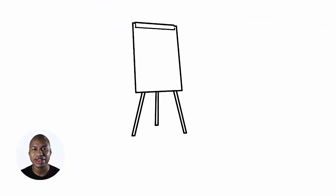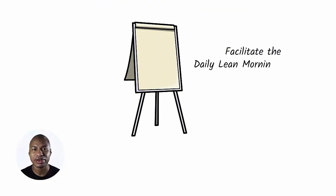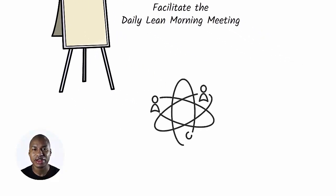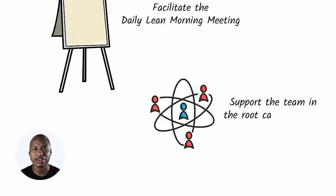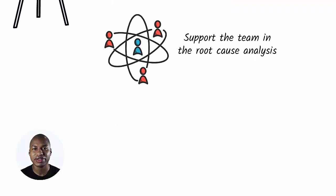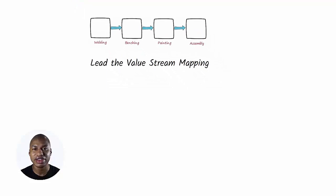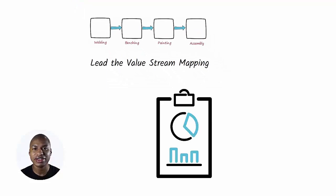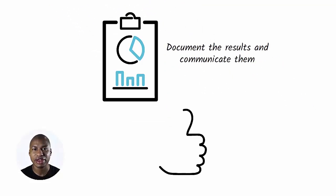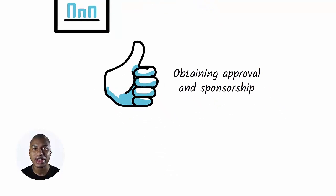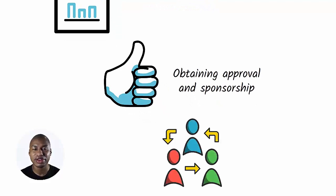The main responsibilities are: Facilitate the daily Lean Morning Meeting to analyze problems with the team and solve them by utilizing problem-solving methods. Support the team in root cause analysis and develop appropriate solutions. Lead the value stream mapping to find opportunities for new projects, bottleneck analysis, and waste reduction. Document the results and communicate them to team members and stakeholders.